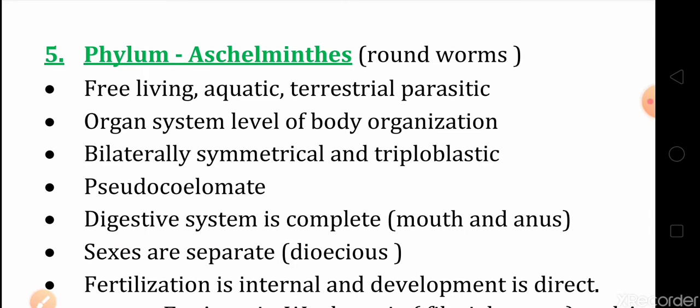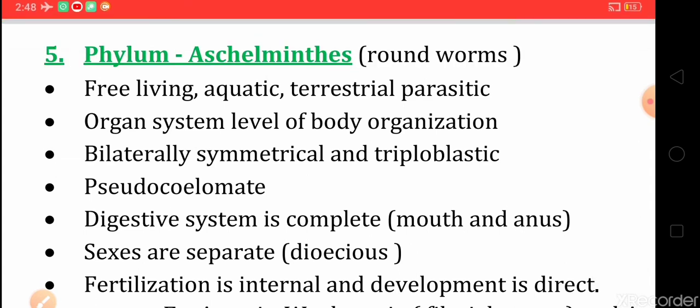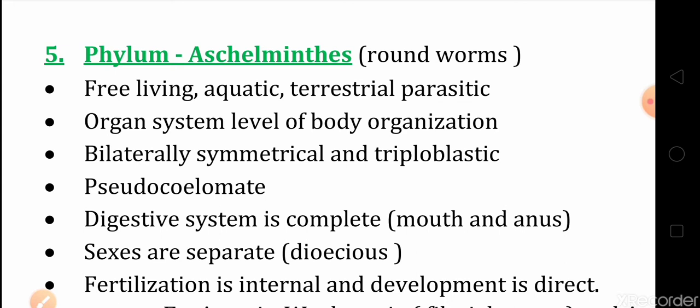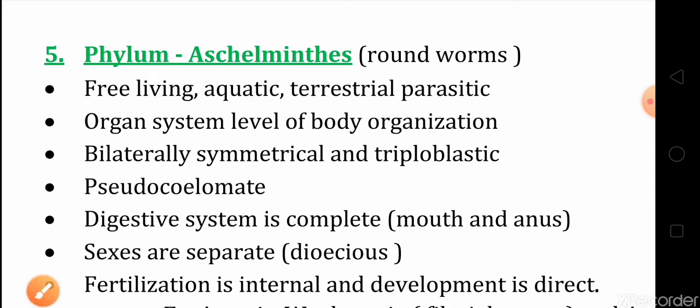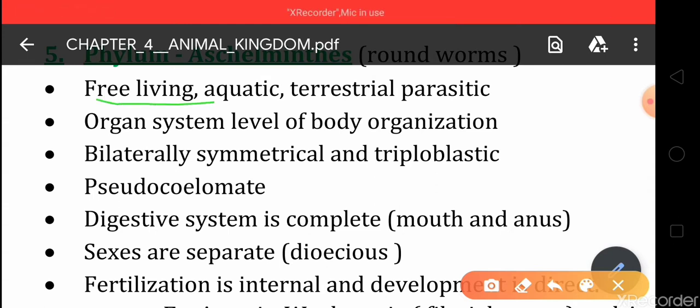Phylum Aschelminthes — these are Roundworms. The organisms found in this phylum are roundworms. They are free-living, found in aquatic and terrestrial habitats, basically in water and also on the land surface.